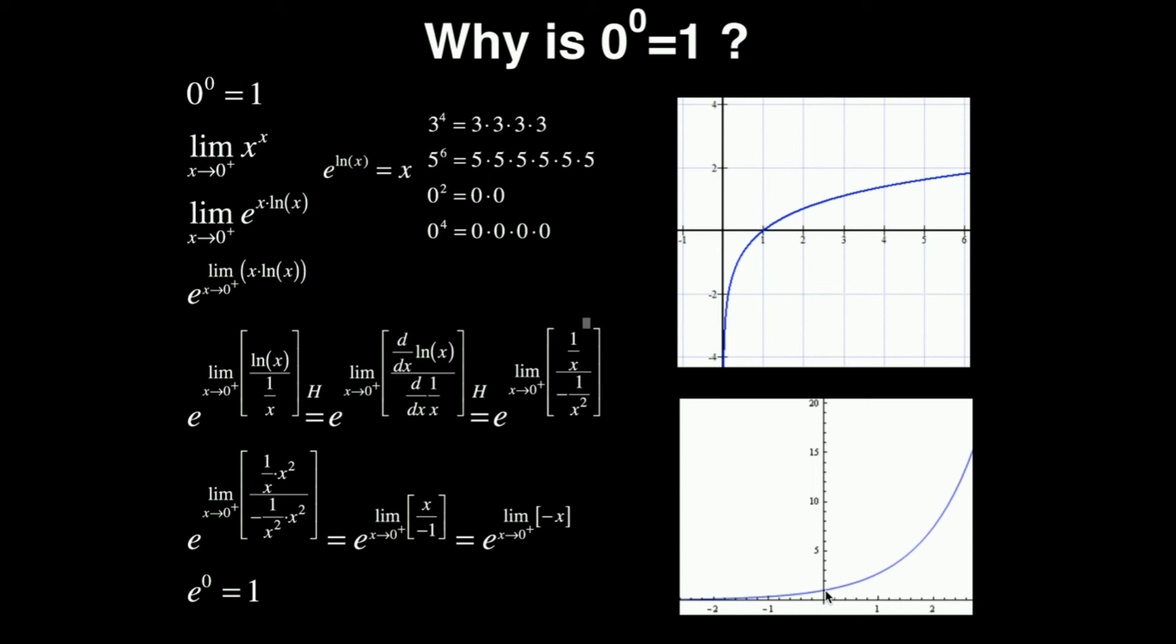So a little bit of a complicated proof. You have to know a little bit of exponent and logarithm laws here and L'Hopital's rule. But, interesting note, 0 to the 0 power is 1. Okay? Please make sure to like this video and subscribe to the channel for future videos and notifications. Thank you very much.